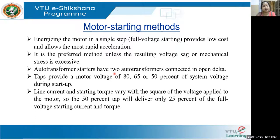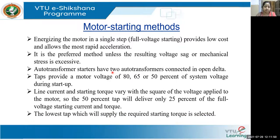Since line current and starting torque both increase with the square of the voltage, a 50% tap will deliver only 25% of the full load starting current or torque. The lowest tap which will supply the required starting torque is selected. For a given starting voltage, resistance and reactance starters draw more current from the line than autotransformer starters, but this type of starter provides higher torque. Reactors are typically provided with 50%, 45%, and 37.5% tappings to control inrush current at the beginning.